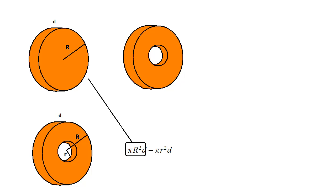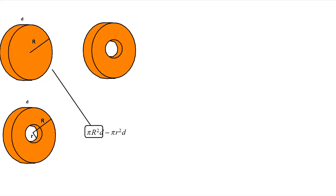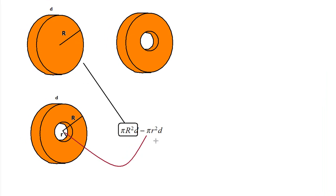And if you look at the inner disc, that is this one, then this has a volume of pi small r square D. And if you take the difference of the two, you get the volume of this washer.